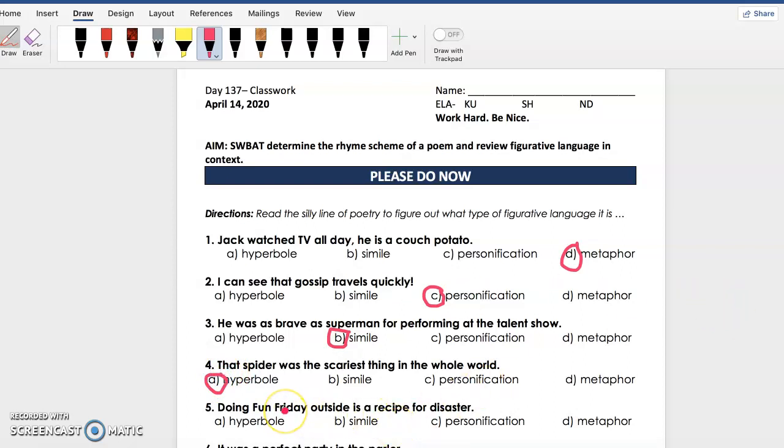Next, Doing Fun Friday outside is a recipe for disaster. I totally agree with that, but that's a little bit exaggeration because it wouldn't be a recipe for disaster, right? But that's just a little bit of exaggeration, so if you chose hyperbole you were right.